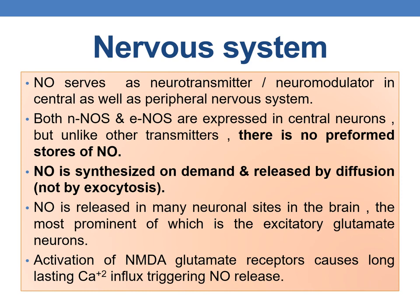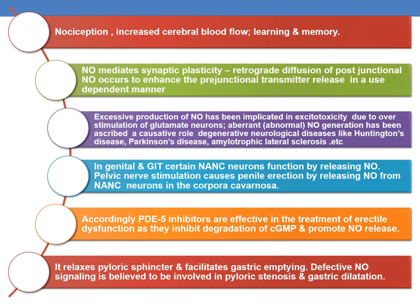Activation of NMDA glutamate receptors causes long-lasting calcium influx, triggering NO release. In the brain, nitric oxide plays effects on nociception, increased cerebral blood flow, learning, and memory, and mediates synaptic plasticity via retrograde diffusion of postjunctional NO to enhance prejunctional transmitter release. Excessive NO production has been implicated in excitotoxicity due to overstimulation of glutamate neurons. Aberrant nitric oxide generation has been ascribed a causative role in degenerative neurological diseases like Huntington's disease, Parkinson's disease, and amyotrophic lateral sclerosis.